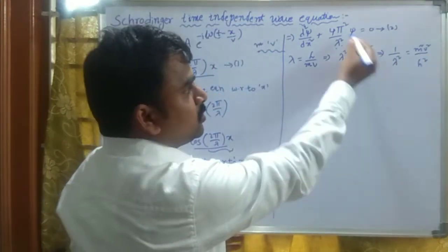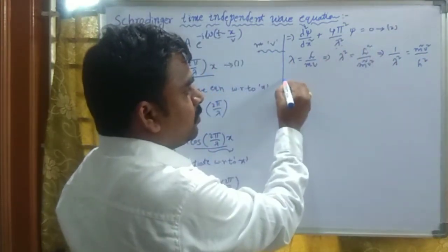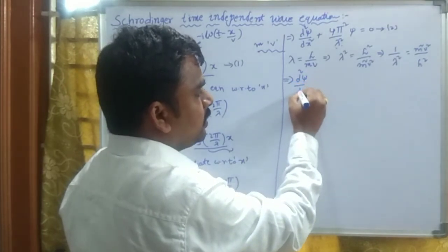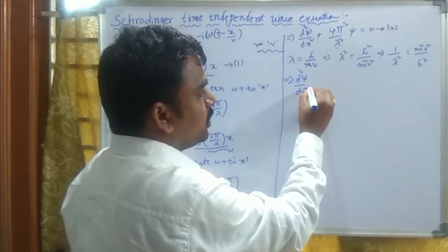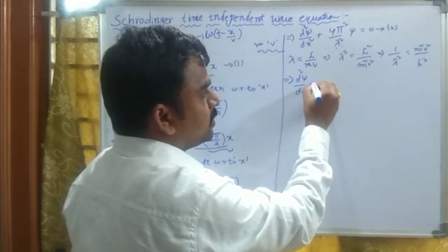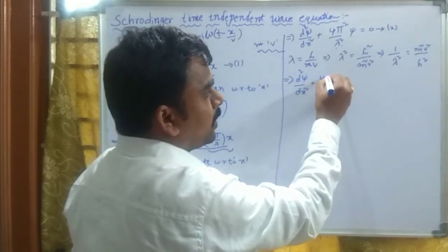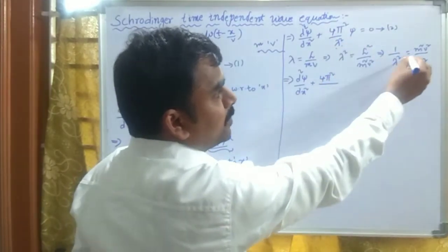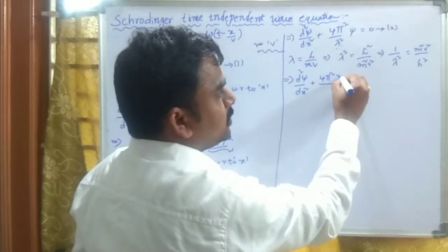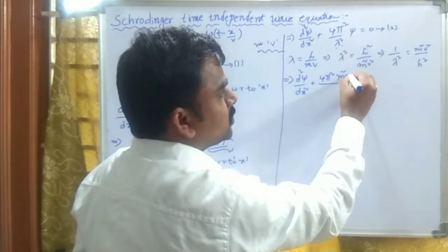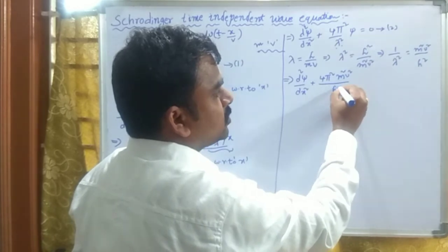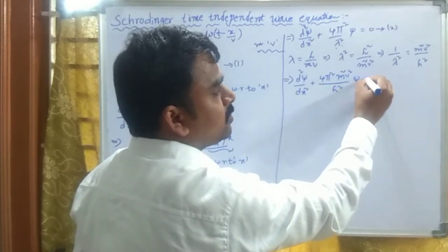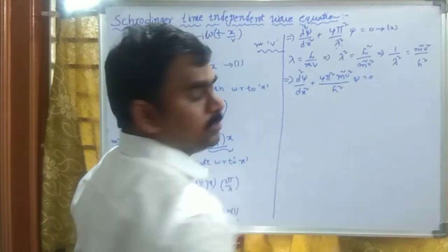Substituting 1/λ² = m²v²/h² into Equation 2, we get: d²ψ/dx² + (4π²/h²)·m²v²·ψ = 0. This is Equation 3.